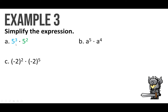Take a look at letter A: you have 5 to the 3rd power times 5 to the 2nd power. I have a saying — when in doubt, expand it out. 5 to the 3rd power gives you 5 times 5 times 5, and times 5 to the 2nd power gives you 5 times 5. All together you have 5 to the 5th power. You're basically adding the 3 plus the 2, which gives you 5. So 5 to the 5th power.